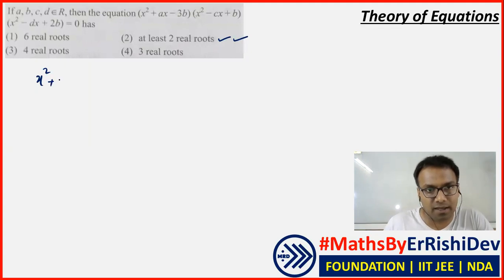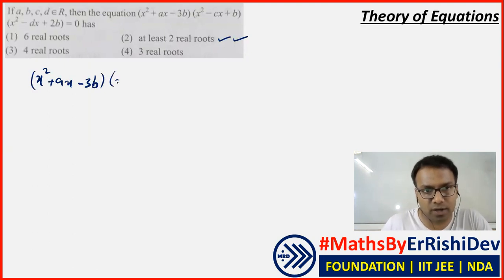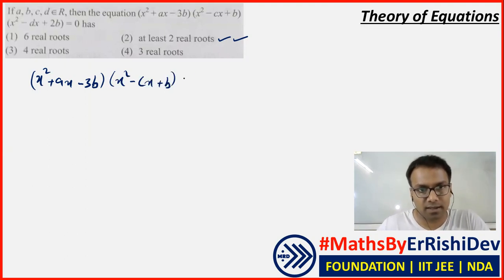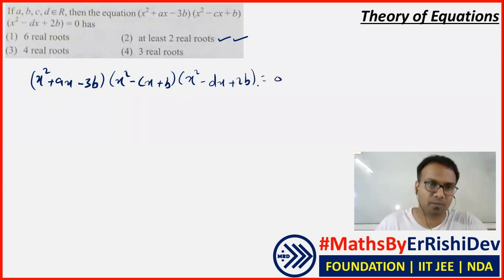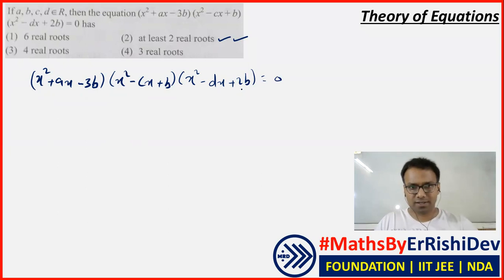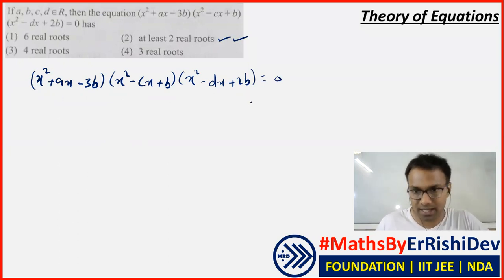Here we have three quadratic equations in one multiplication: (x² + ax - 3)(x² - cx + b)(x² + dx + 2b) = 0. These are the three quadratic factors.